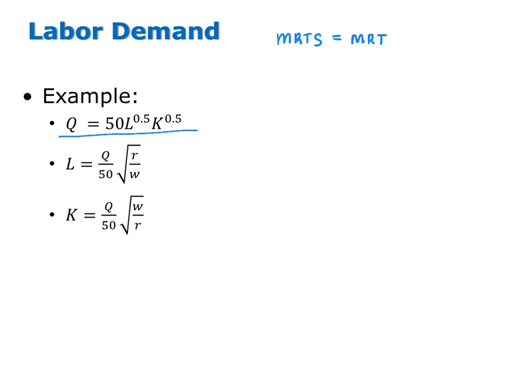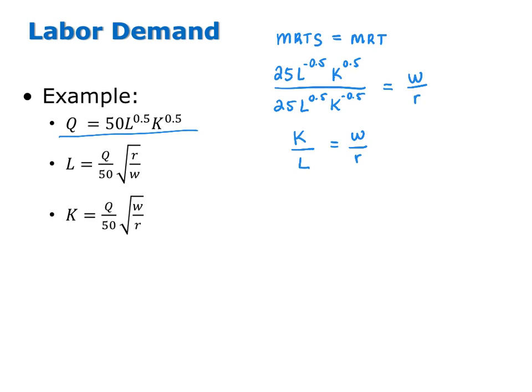The marginal rate of technical substitution is the ratio of marginal products — the marginal product of labor divided by the marginal product of capital. Here the MRTS simplifies to K over L. We're going to set that equal to the MRT, which is the input price ratio, specifically the price of labor over the price of capital. Unlike when we wanted to find a cost minimizing bundle for specific input prices, here we don't want to set these input prices equal to any values — instead we want to keep this more general.